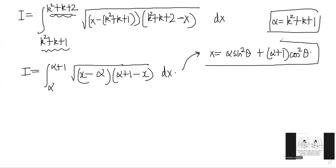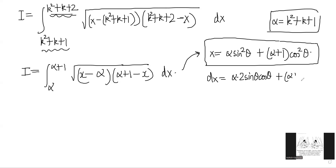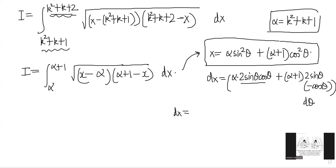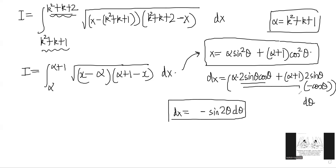Let's calculate dx. Differentiating x = α sin²θ + (α + 1) cos²θ gives α · 2 sinθ cosθ plus (α + 1) · 2 cosθ · (−sinθ), which simplifies as follows. Notice both terms involve sin2θ: dx = α sin2θ − (α + 1) sin2θ, which gives dx = −sin2θ dθ.